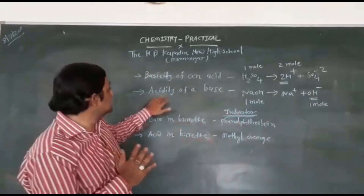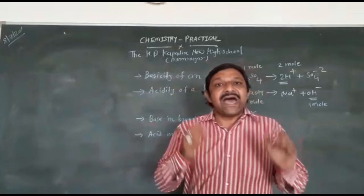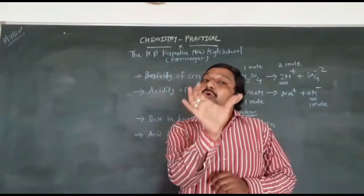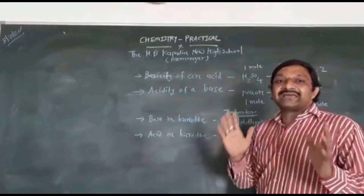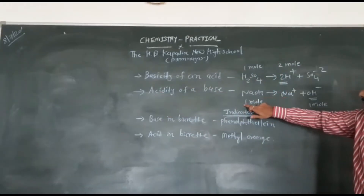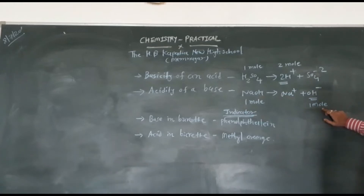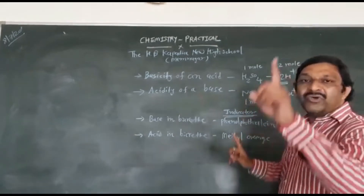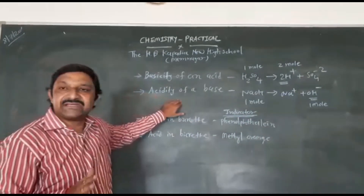Acidity of a base is the number of replaceable hydroxyl (OH-) ions in the base. For example, in NaOH the number of moles before reaction is one, and after reaction it is also one. So the acidity of NaOH is one.